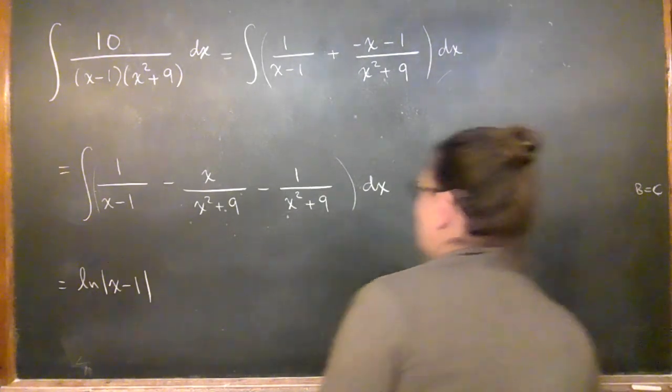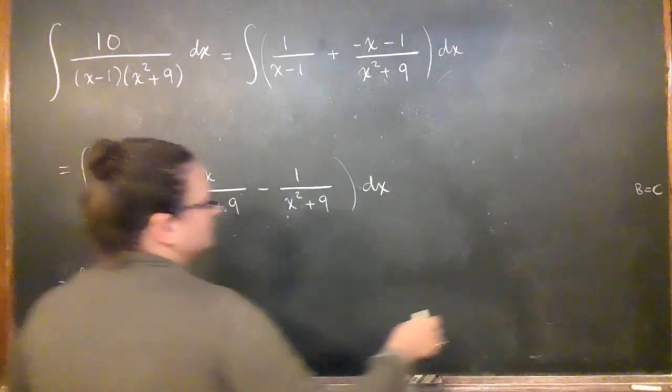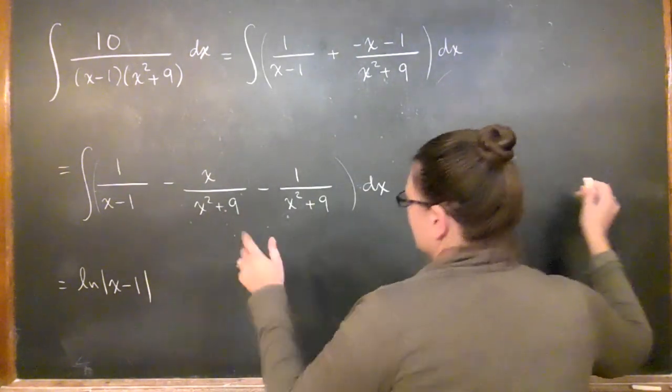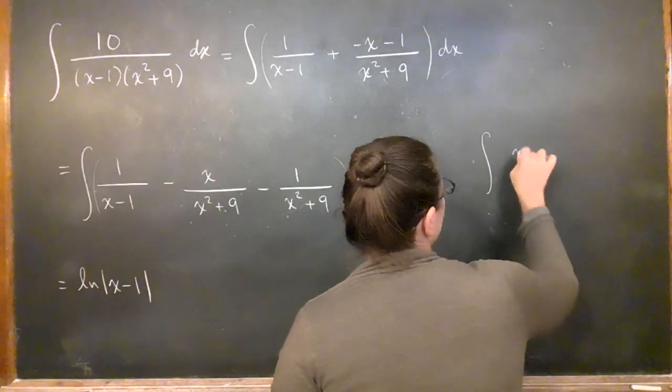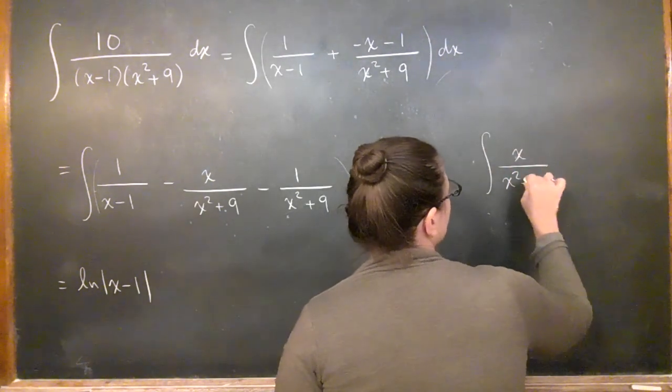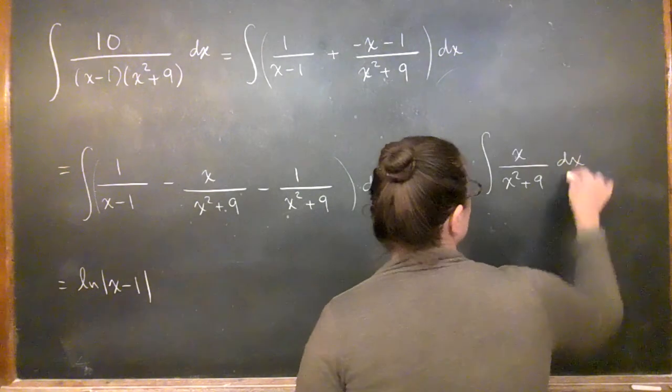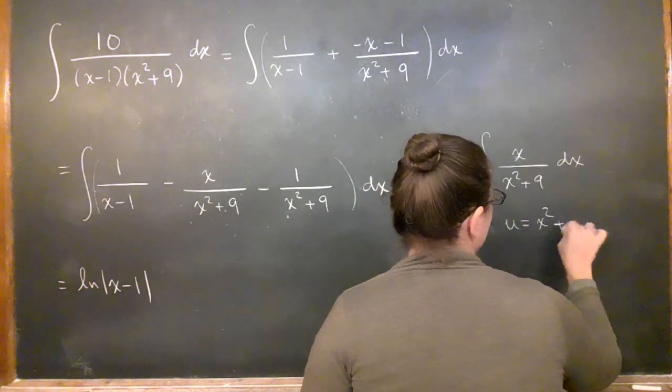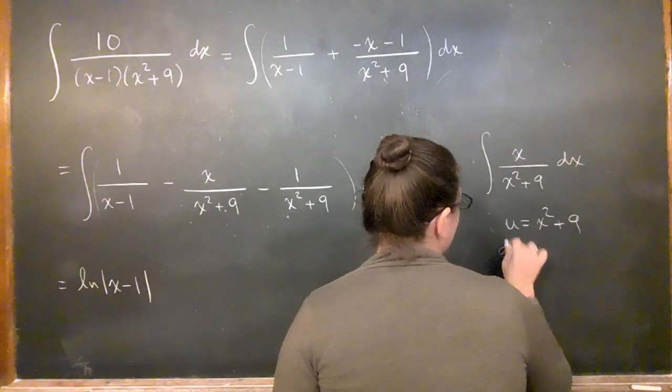Actually, I don't really need it. I'll just write it in two steps. Anyway, I'll just write it over here so it looks nice over there. So integral of x over x squared plus 9 dx. If you see what I'm doing, you can just ignore me for a minute or fast forward me, right?